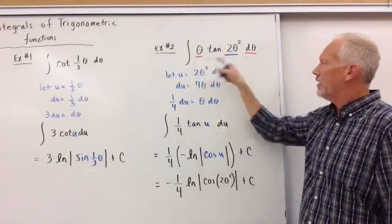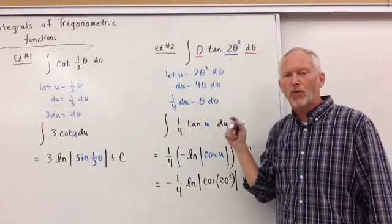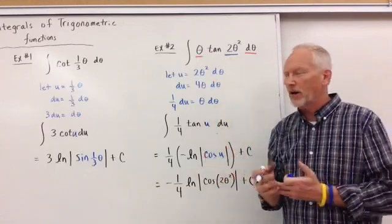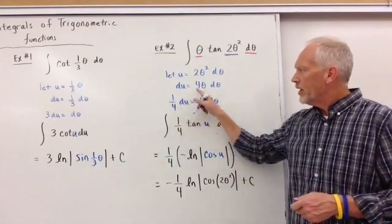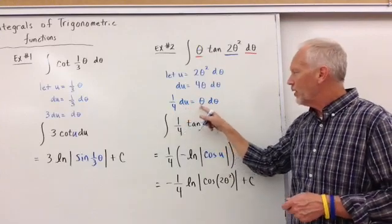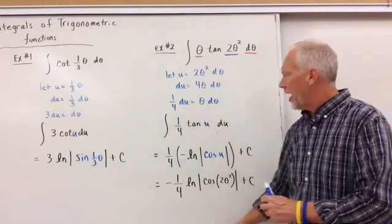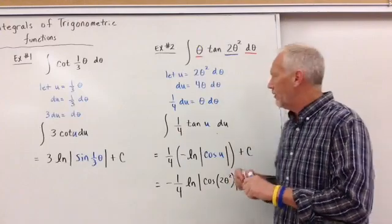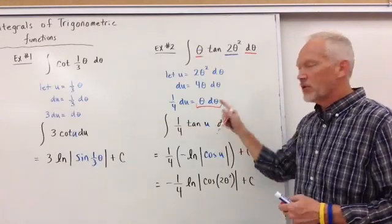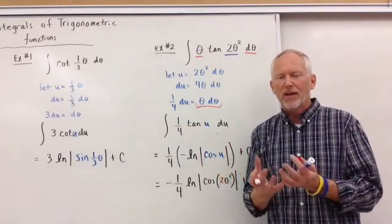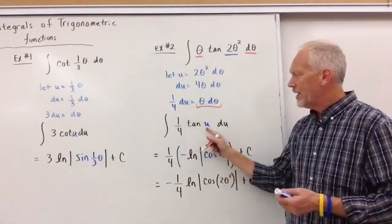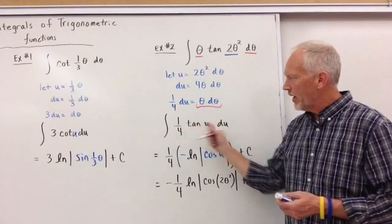And now we want theta d-theta, right? I've isolated those. I've underlined them in red because those are the things that are outside the tangent function that I want to try and eliminate. And if I do, if I divide by four, I get one-fourth dU is equal to theta d-theta. Well, that is exactly what I wanted to get rid of. So here's my theta d-theta, and that matches there. So now I can simply substitute that information there for that. So now I get one-fourth tangent of U-dU as my integral.